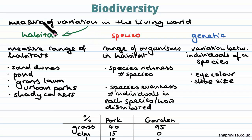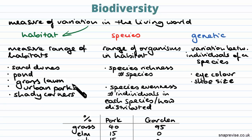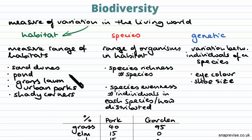Firstly, we have habitat biodiversity, or habitat variation, and this is simply the measure of a range of habitats in a particular geographical area. So you might measure how many sand dunes there are — a pond is a separate habitat — and even within your own neighbourhood there might be a number of different habitats: grass lawns, parks, shady corners. These are all separate habitats.